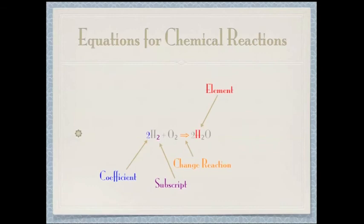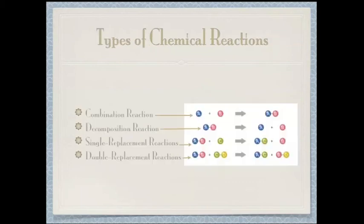Equations for chemical reactions include the coefficient, subscript, reactant, and element. The types of chemical reactions are combination reactions, decomposition reactions, single replacement reactions, and double replacement reactions.